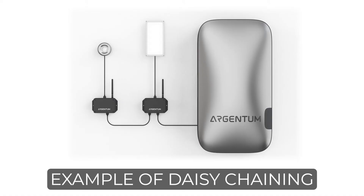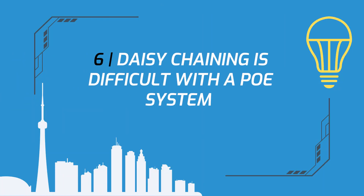And finally, in general, daisy chaining is difficult with a PoE system, making more home runs and therefore more cabling necessary. This also increases the cost and complexity of implementing PoE.